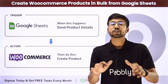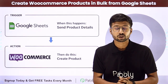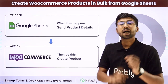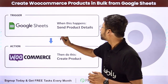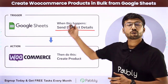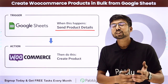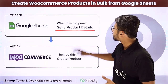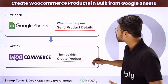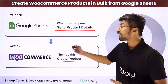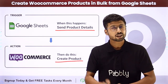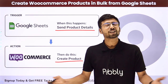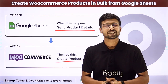You can actually automate this process. In this automation, at one click, after setting up, we are going to send all the product details from our Google Sheet. And then using this Pabbly Connects automation which we are going to build, automatically all of those products will be created in our WooCommerce account one by one. So let's see how you can set up this automation.